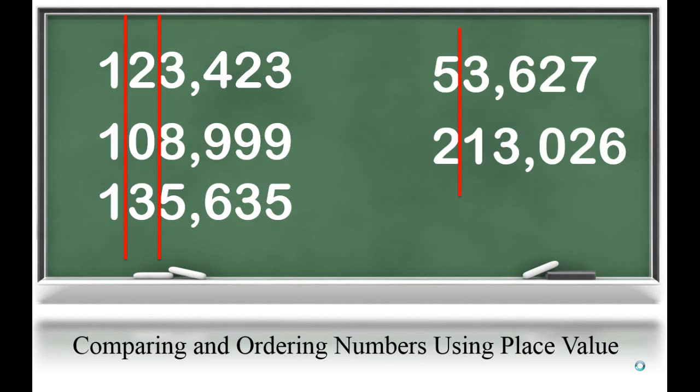Now, one common misconception that students might have is they might line everything up to the left, but we want to make sure to look at what that place value represents. In this case, this student would probably think that 53,627 is the greater number. But they're incorrect because that 5 is in the 10,000s place. So that number needs to be shifted over. 200,000 is more than 50,000.